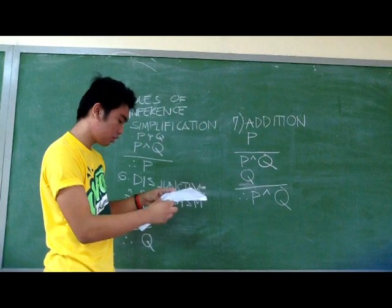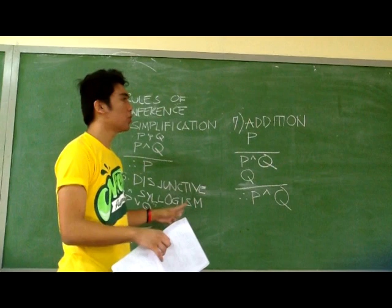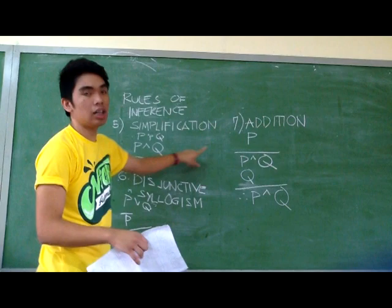We have seven rules of inference. First is Modus Ponens, second is Modus Tollens, then Conjunction and Disjunction, Simplification, Disjunctive Syllogism, and Addition.